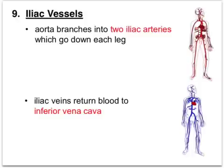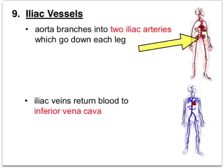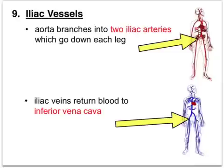The next set of vessels are the iliac vessels. The iliac arteries branch off the aorta and lead down to the legs — one down each leg. The iliac veins come from both sides and empty into the inferior vena cava. Although shown in two separate diagrams, the iliac arteries and veins run alongside each other, as do the renal and coronary vessels.